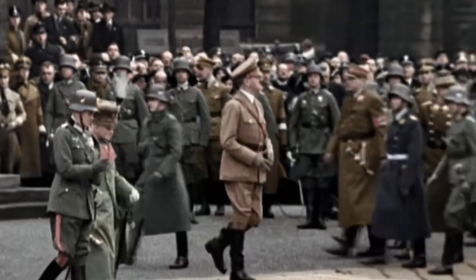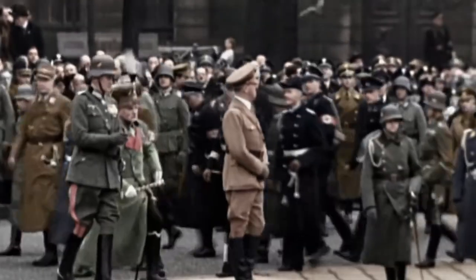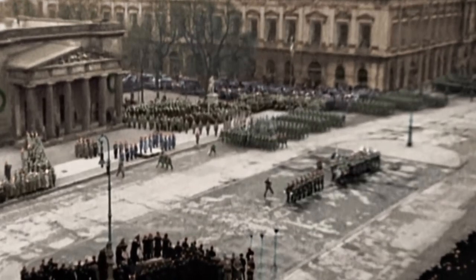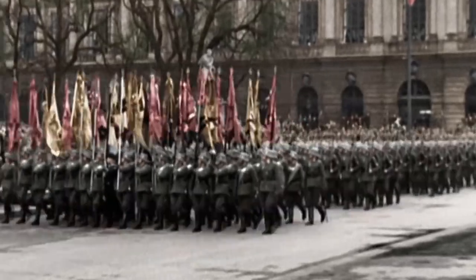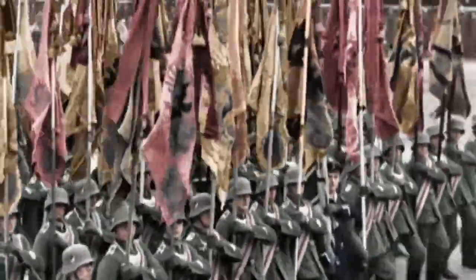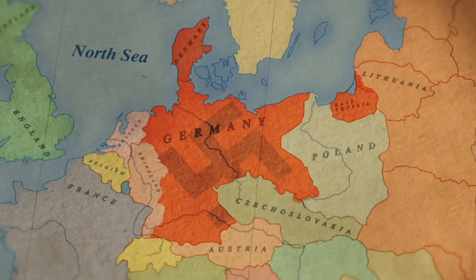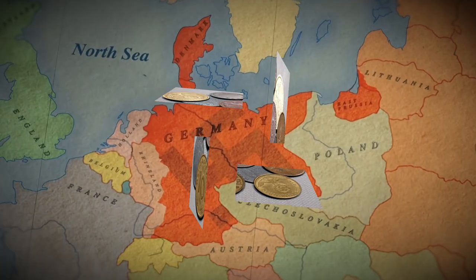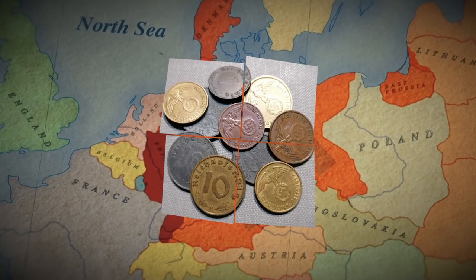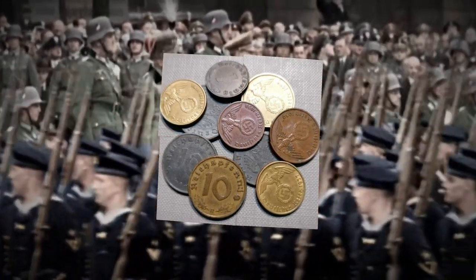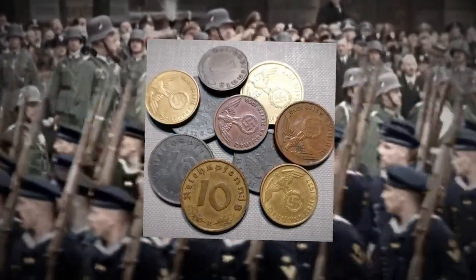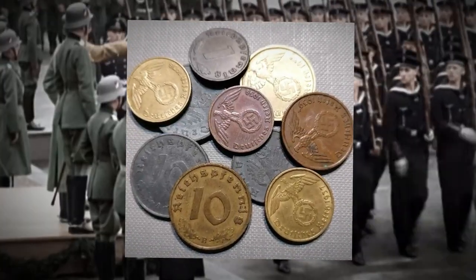During the Nazi era, coins were still extensively circulated and used alongside banknotes. In 1924, the German government replaced the old currency, the Mark, with a new one called the Reichsmark. The coins used for the Reichsmark were different from those used during the Mark era. The Nazi regime also introduced several other new coins — for instance, instead of the half-Reichsmark, they introduced a two-Reichsmark piece. The design of these coins featured Nazi insignias such as swastikas and German eagles.